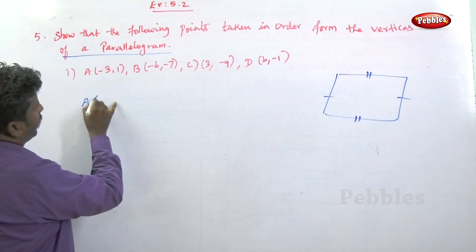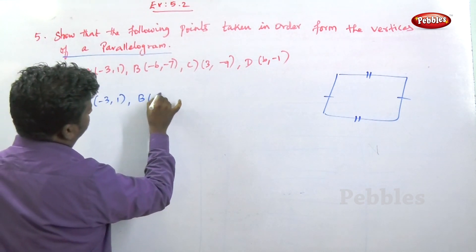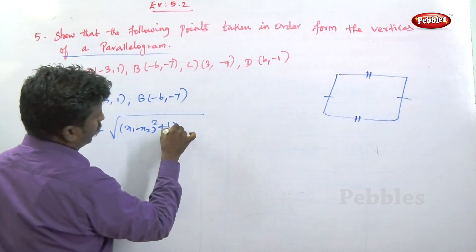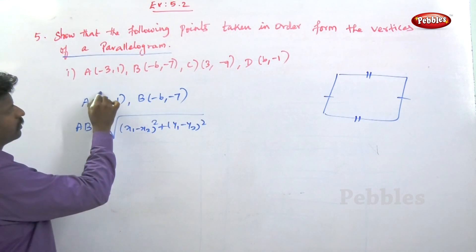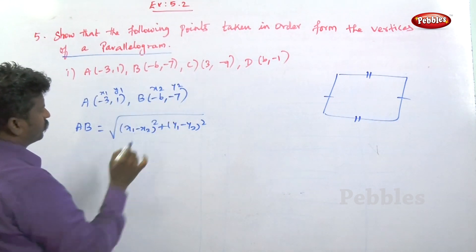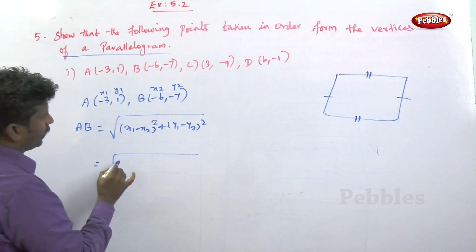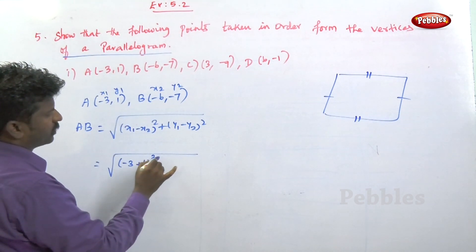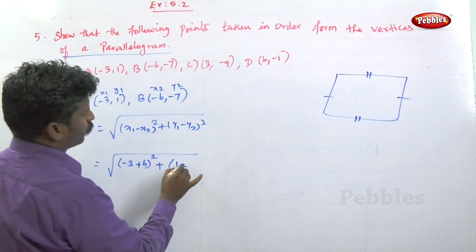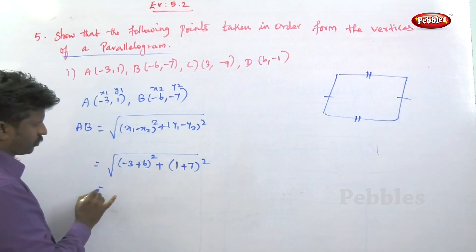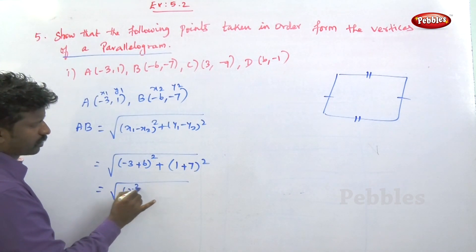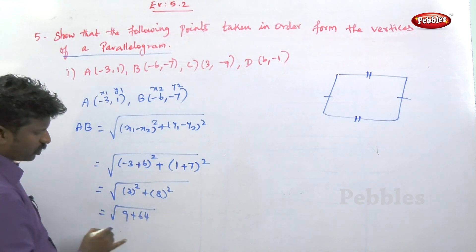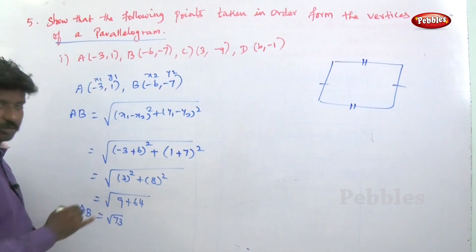The A point is (-3, 1) and the B point is (-6, -7). AB is equal to root of (x1 minus x2) whole square plus (y1 minus y2) whole square. So it is root of (-3 minus (-6)) whole square plus (1 minus (-7)) whole square, which is root of 3 squared plus 8 squared, equal to root of 9 plus 64, so root 73.